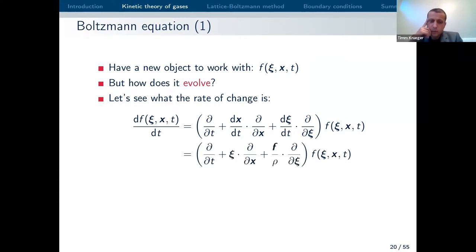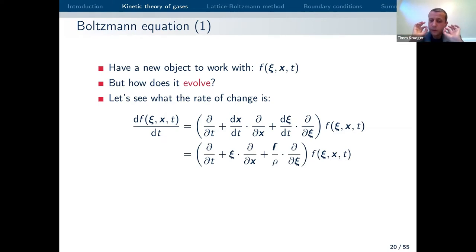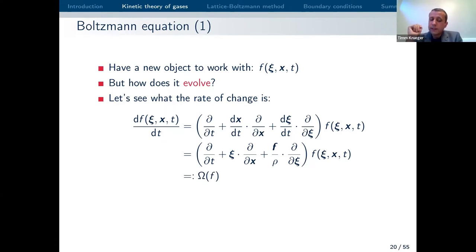Since we have three variables now — velocity space, space, and time — we have three terms here. If all the molecules were just moving on straight lines, the answer would be zero. This means if the time derivative is not zero, this must be due to collisions between molecules. Whatever comes out of this evaluation must be something related to collisions — we call it the collision operator Ω. If you have molecules that are not interacting whatsoever, like neutrinos moving around, df/dt would be zero. But for everything that collides, it wouldn't be zero — whatever is not zero is called the collision operator.